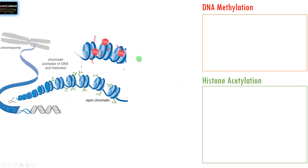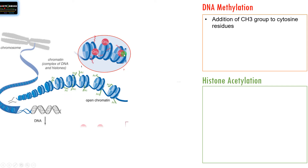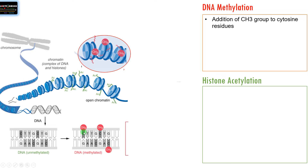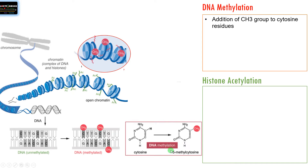DNA methylation, as the word suggests, is a methylation of DNA. A methyl group is added to the cytosine residues of the DNA. As you can see here, this is exactly what is happening — at the fifth carbon position, the methyl group is added and it becomes 5-methylcytosine. The enzyme involved is DNA methyltransferase.